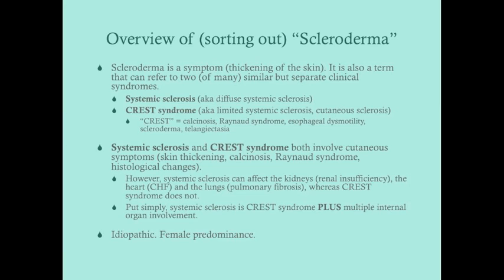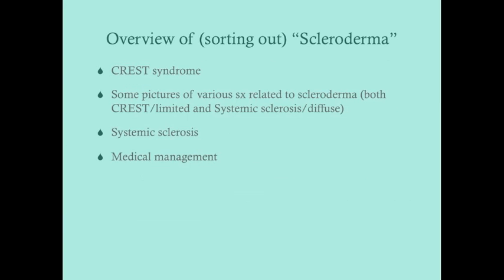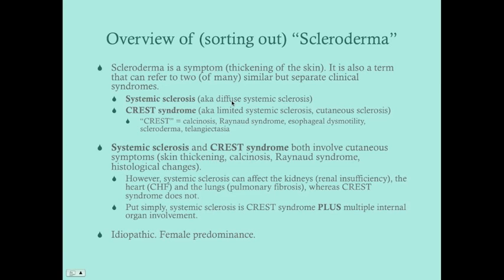CREST syndrome does not involve internal organ systems significantly. To put it simply, systemic sclerosis is your CREST symptoms plus multiple internal organ involvement. All types of scleroderma are idiopathic and tend to have a female predominance. Note that systemic sclerosis is also called diffuse systemic sclerosis, and CREST syndrome is also called limited systemic sclerosis or cutaneous sclerosis.